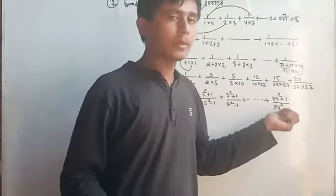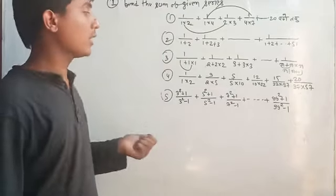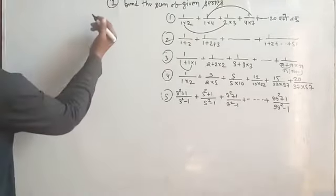And this is the last term. This is 99 square plus 1 upon 99 square minus 1. This is the way to the order. And this is a logic. Okay? But this is the way to make this short.